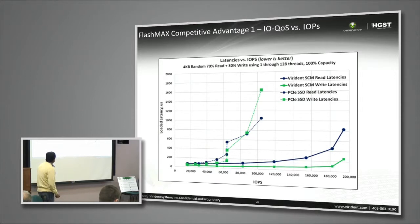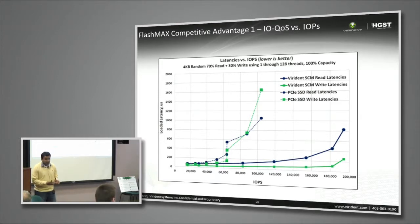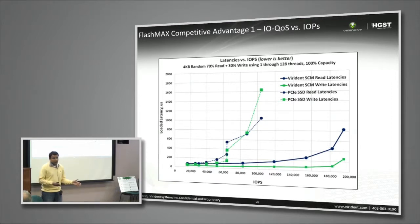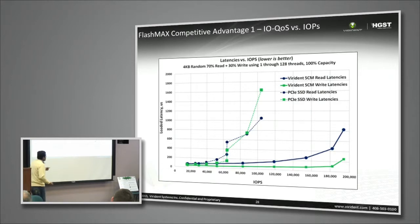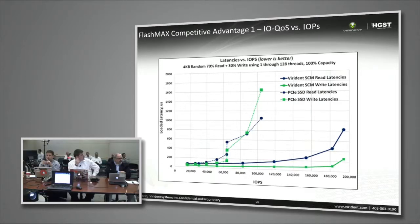Write latencies are less than read latencies because of the nature of flash. As we move from one NAND feature size to the next — for example, from 25 nanometer to 20 nanometer — the page size goes bigger, so you have to read more data, and obviously the read latency goes higher. The architecture involves writing to RAM and then destaging it to flash, which explains the write latency advantage.